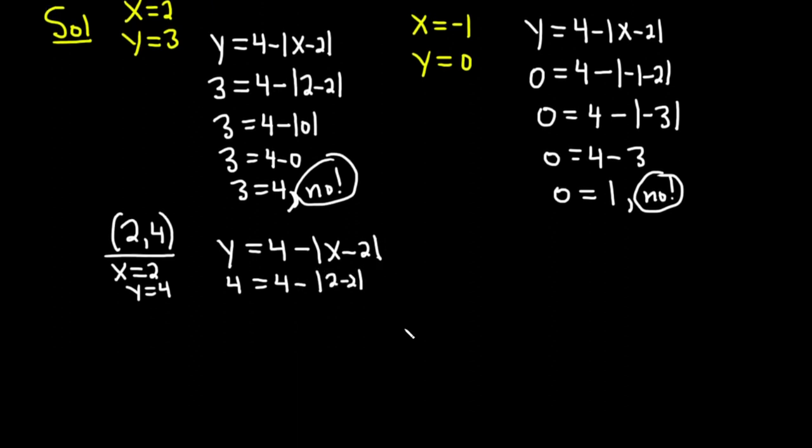The absolute value of 2 minus 2 is 0 so we get 4 equals 4 minus the absolute value of 0. But the absolute value of 0 is 0 so 4 equals 4 minus 0 so 4 equals 4. So in this case it would be yes because it's true.